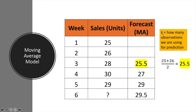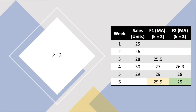I can even use K equal to 3. Let's look into the example. Here I've used K equal to 3, where I have forecasted the sales for week 4 as 26.3. How did I get 26.3? I added up 25, 26, and 28 and divided by 3, so that's how I got 26.3.